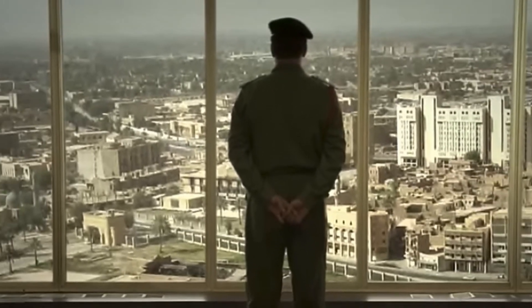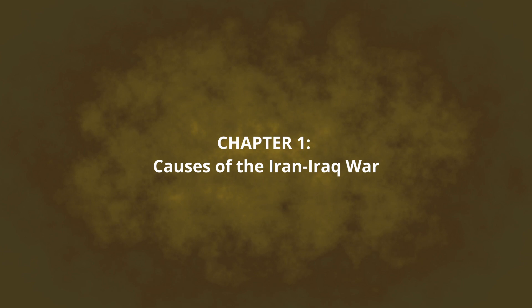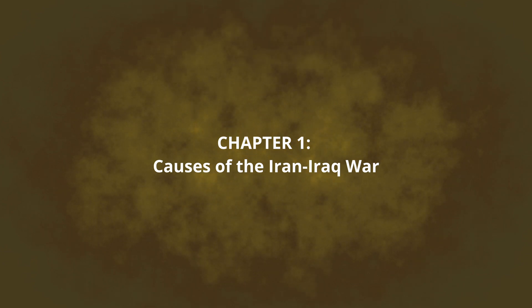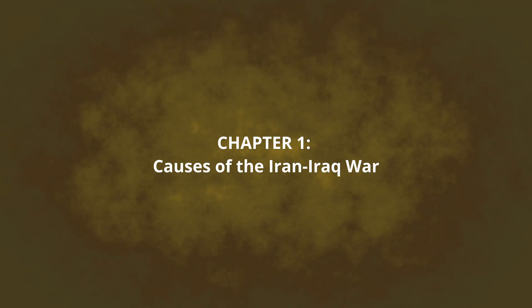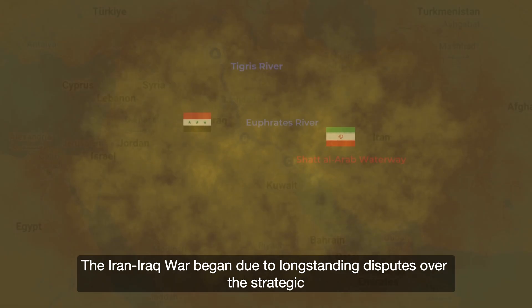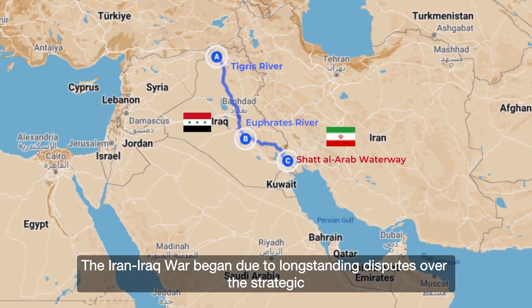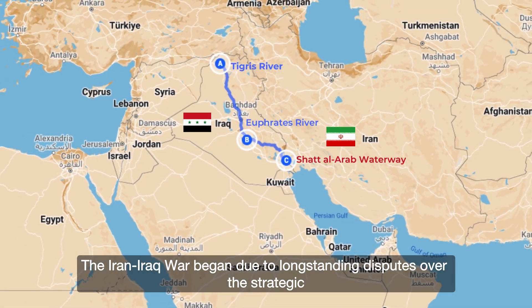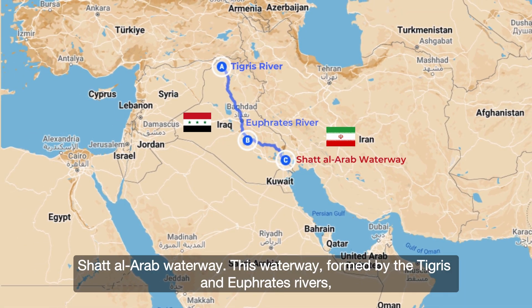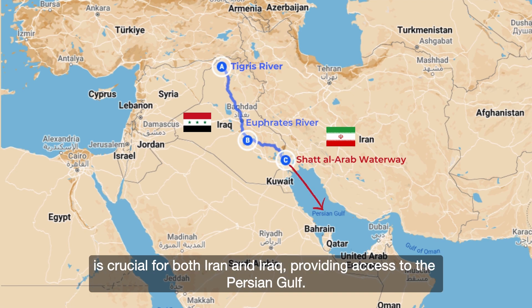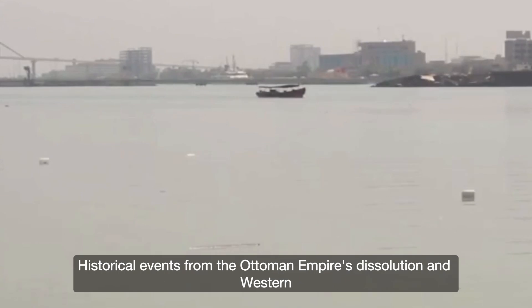Let's get started. The Iran-Iraq War began due to long-standing disputes over the strategic Shat al-Arab waterway. This waterway, formed by the Tigris and Euphrates rivers, is crucial for both Iran and Iraq, providing access to the Persian Gulf.